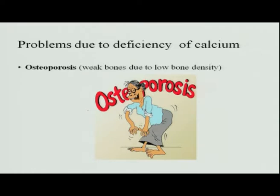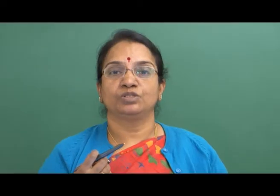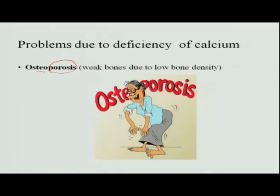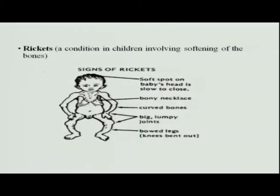Calcium deficiency in adults causes osteoporosis. The bones become porous as calcium is depleted from them to maintain blood levels. Such people are prone to fractures very easily. This is a very common symptom in adults when calcium deficiency occurs.